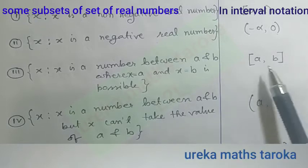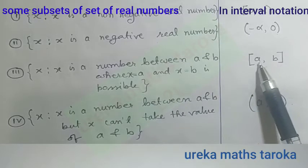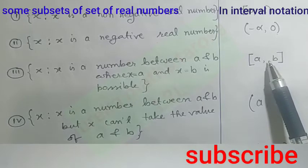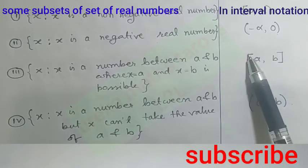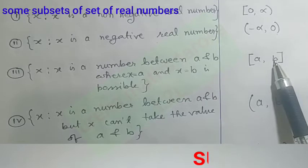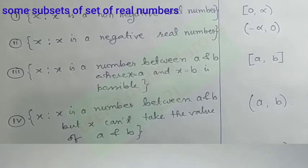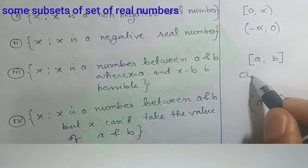In interval notation, we write [a, b]. A is included by this bracket, and b is also included. When both endpoints are included, we call it a closed interval.